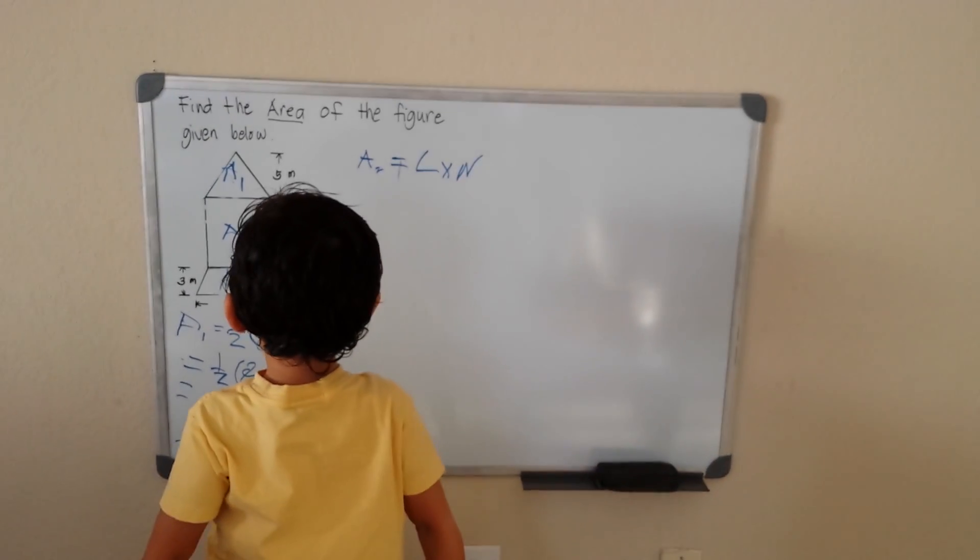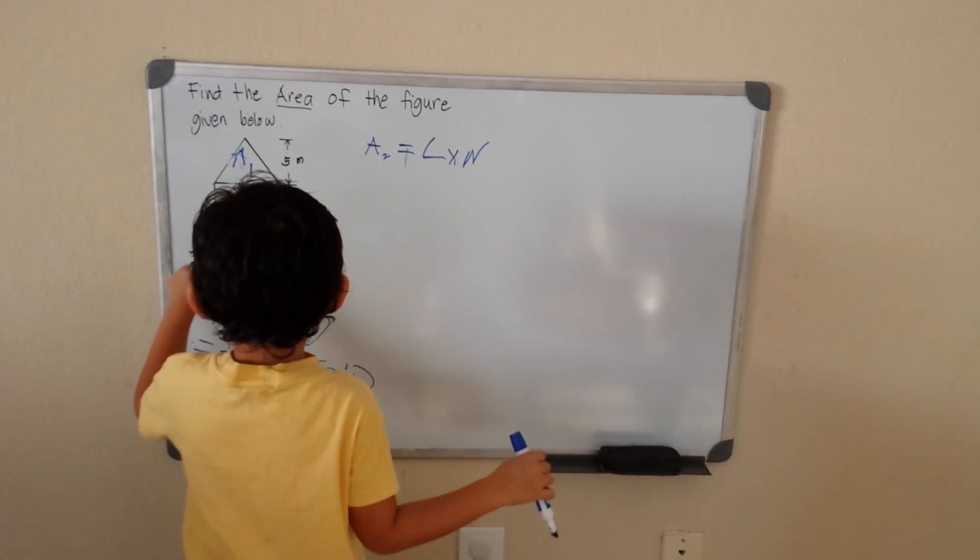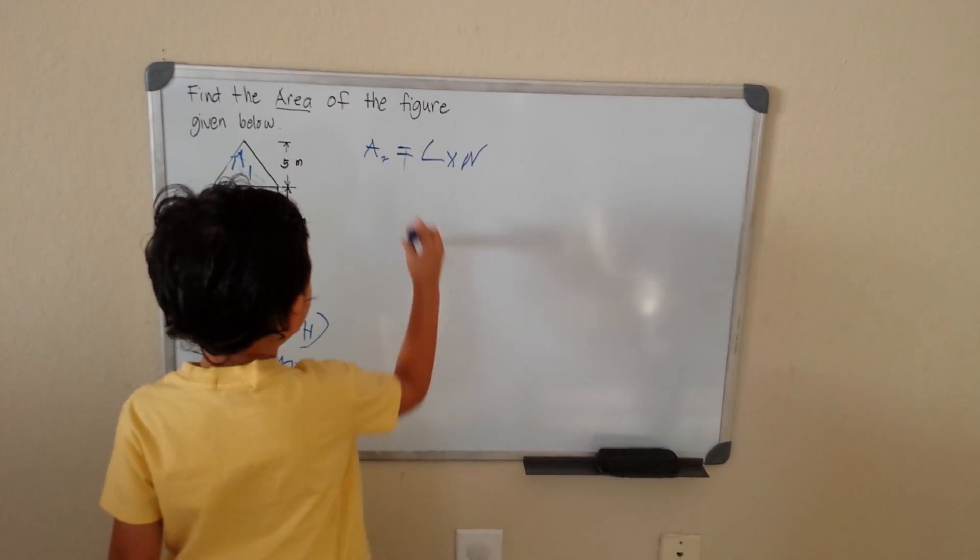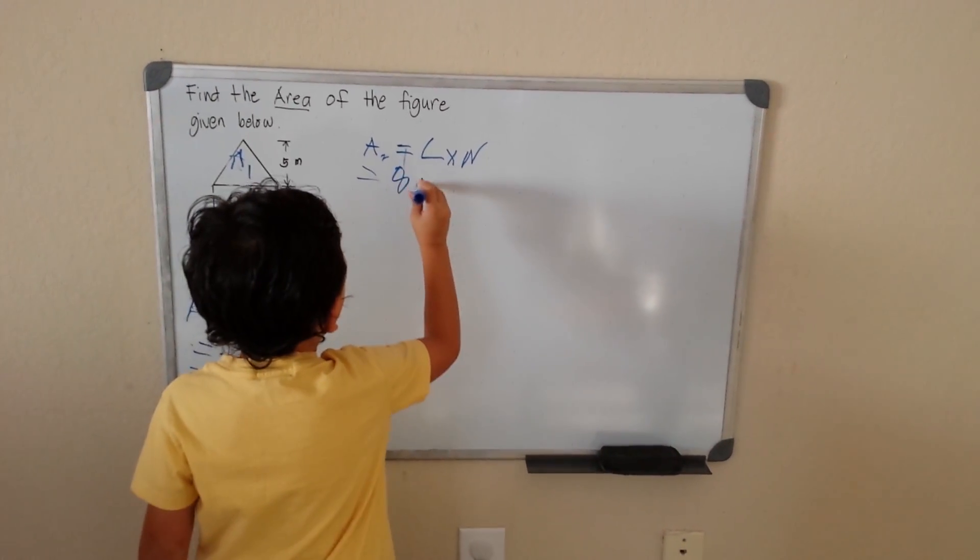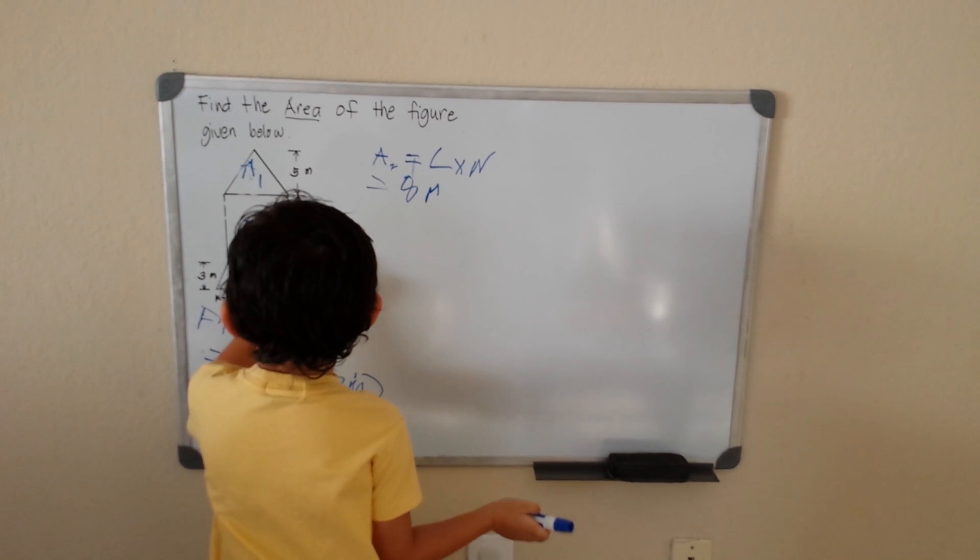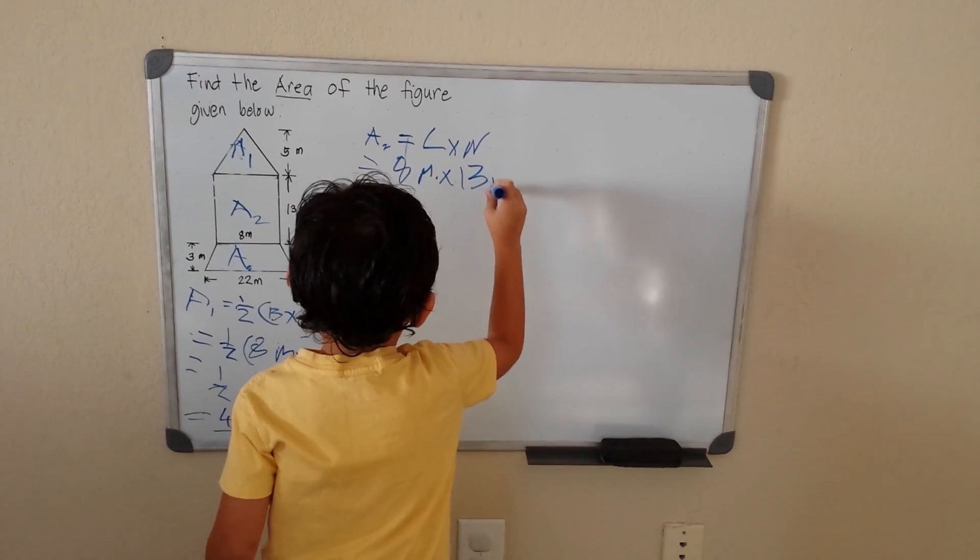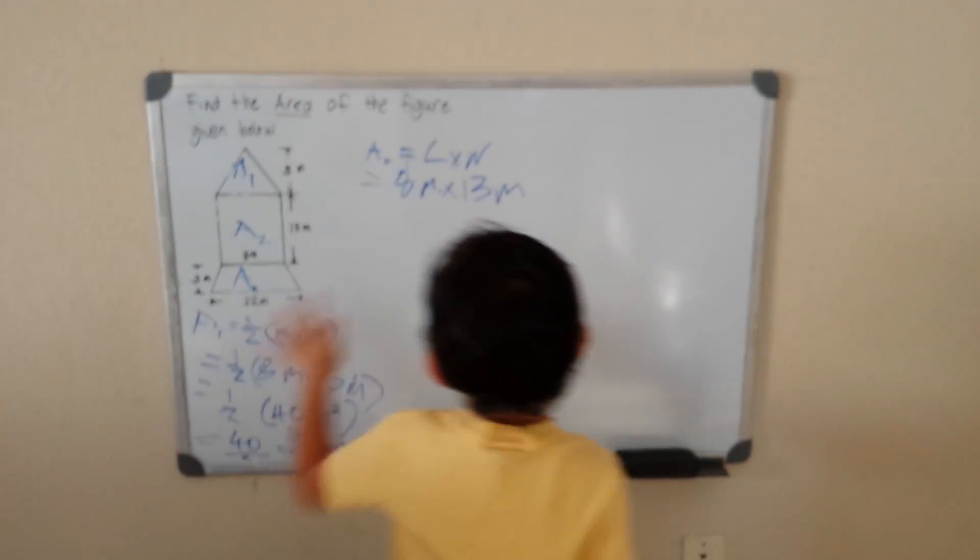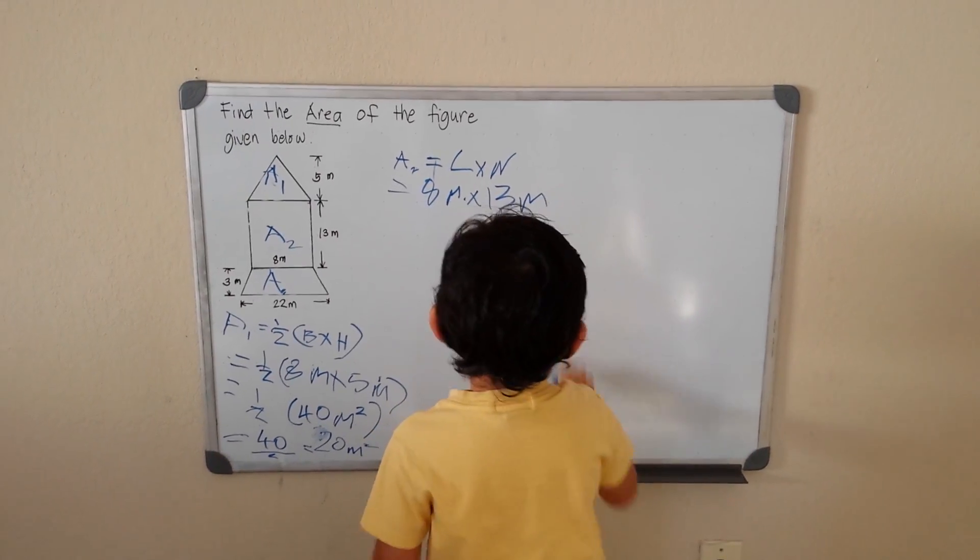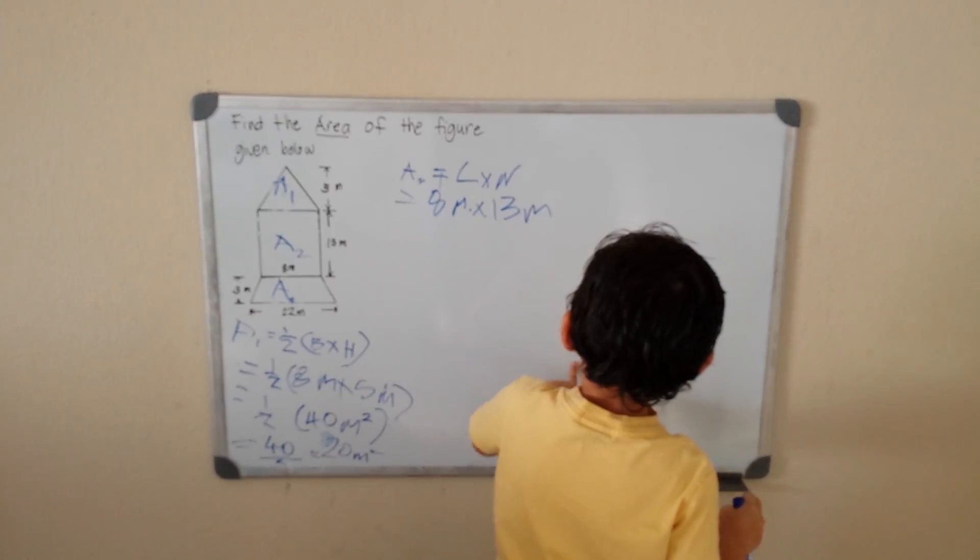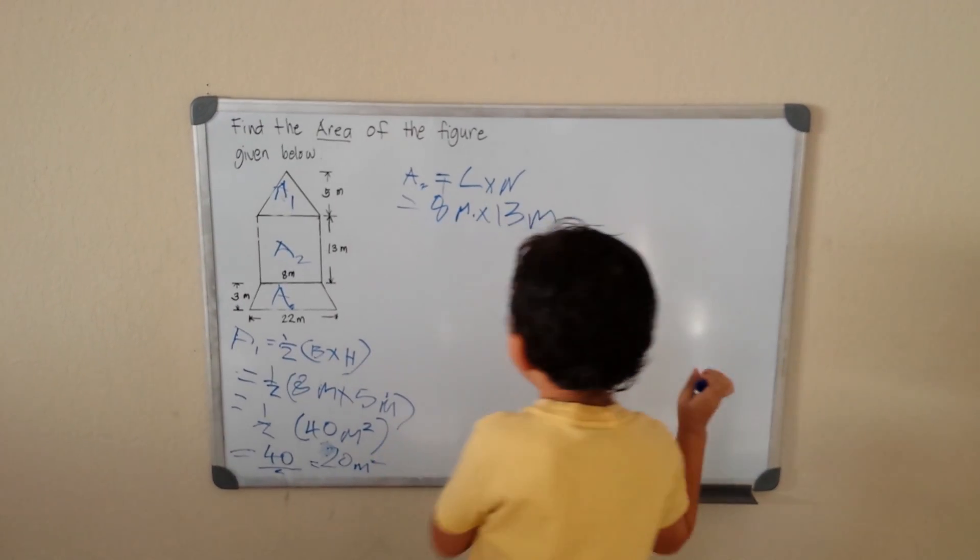The area for the rectangle is length times width. The length would be 8 meters. So let's plug it in. We got 8 meters times 13 meters. We can multiply them.